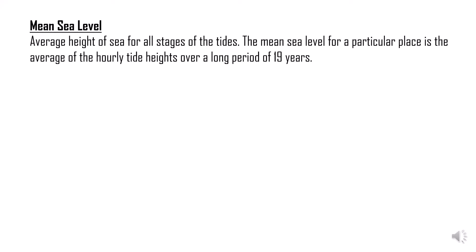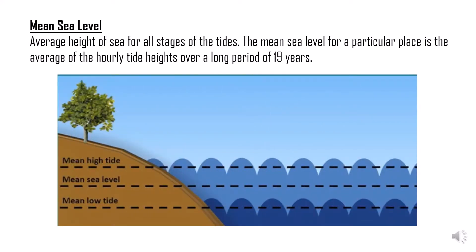What is mean sea level? It is the average height of sea for all stages of tides. The tide level varies — it shows a mean low tide at one time and a high tide at another. What we do is take the average of hourly tide heights, and this record is calculated over around 19 years. A record of 19 years is studied and the average of all tide levels is taken — this forms the mean sea level.